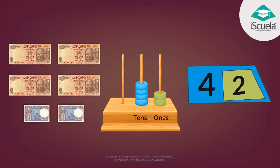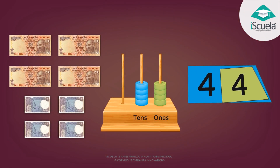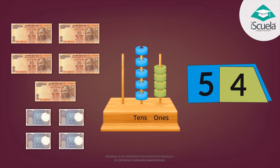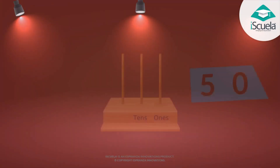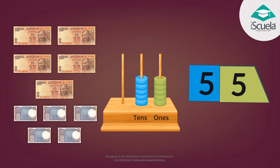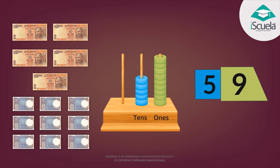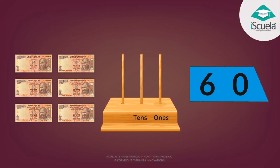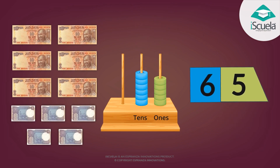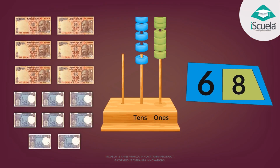Forty and four: forty-four. Fifty and four: fifty-four. Fifty and five: fifty-five. Fifty and nine: fifty-nine. And sixty. Sixty and five: sixty-five. Sixty and eight: sixty-eight.